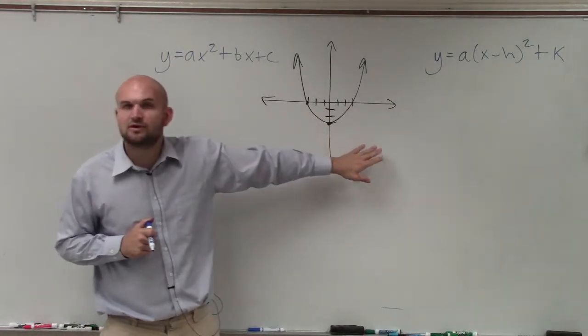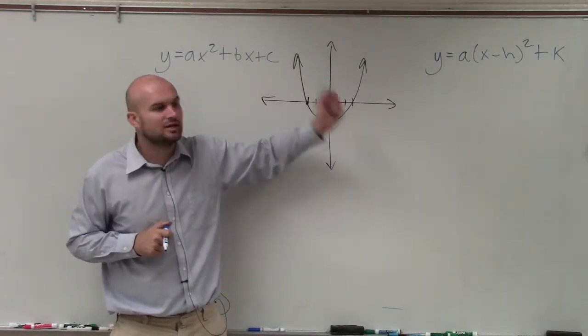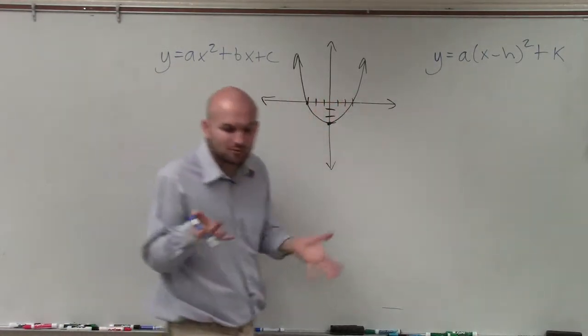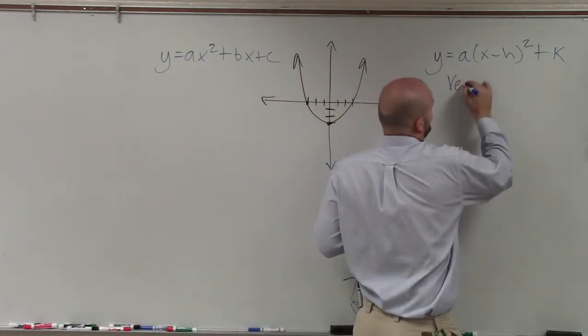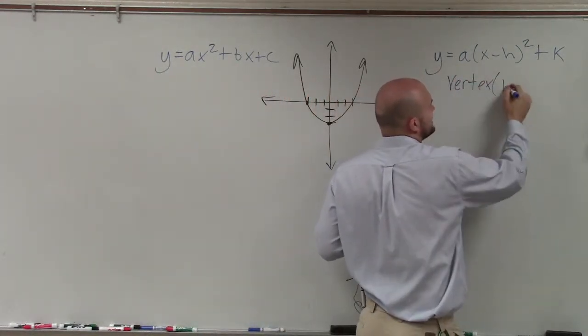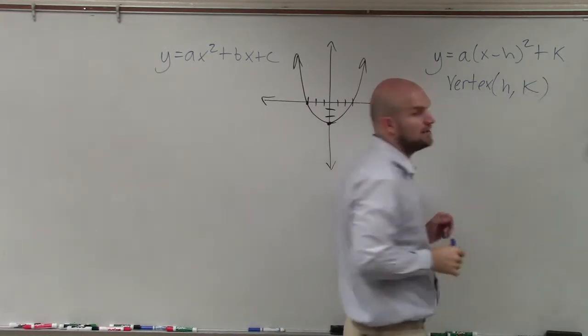But the next thing is, the important thing that we learned was vertex form. Converting from standard form to vertex form. And the reason why that was important, because the vertex, when it's in this format, we can easily identify the vertex as h comma k.